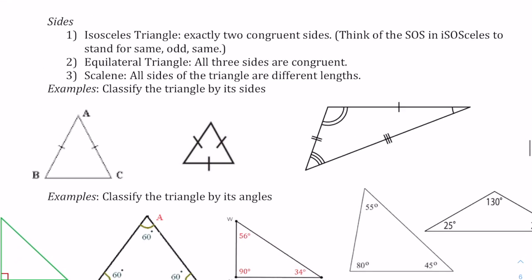You can also classify triangles by their sides. You have an isosceles triangle with two congruent sides — the tick marks represent matching sides, so two of them match and then one of them doesn't.